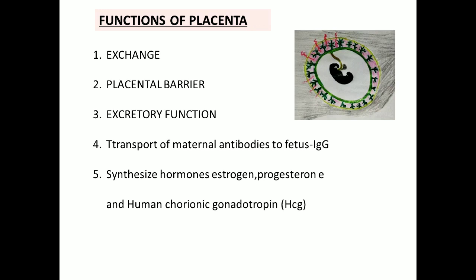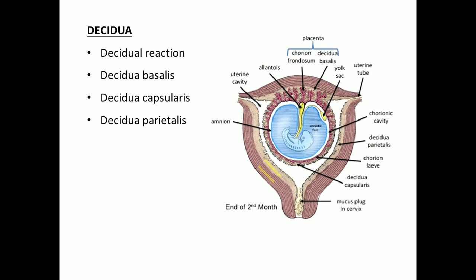The third function is excretory function — metabolic waste products from the fetal blood will be transported across the placenta to the maternal blood and excreted. Next is transportation of maternal antibodies to the fetus, especially immunoglobulin. The last function is that the placenta synthesizes certain hormones like progesterone, estrogen, and also HCG — human chorionic gonadotropin hormone.